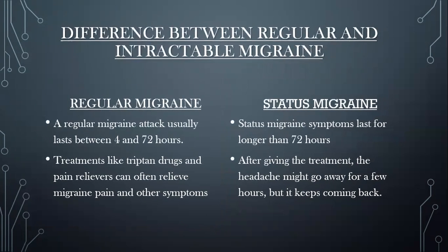Now let's make intractable migraine easier to understand by comparing it with regular migraine. A regular migraine lasts between 4 to 72 hours and does not exceed 72 hours — it can be relieved by treatments like triptan drugs. In contrast, status migraine exceeds more than 72 hours and cannot be relieved even after giving the standard treatment given for regular migraine, because it keeps coming back.